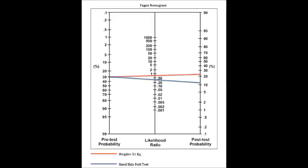After completing the hand-skin fold test, the patient tests negative for osteoporosis. Looking at the chart, the negative likelihood ratio for the hand-skin fold test is 0.4. The physician charts the pre-test probability and this negative likelihood ratio on the Fagan nomogram and sees that the post-test probability is about 12%. This is 11% less than the post-test probability of the weight test and an 18% decline from the 30% pre-test probability. Because of this, the physician would choose the hand-skin fold test to rule out the diagnosis of osteoporosis in patients presenting with symptoms of this condition.